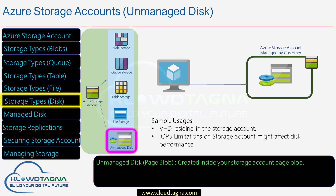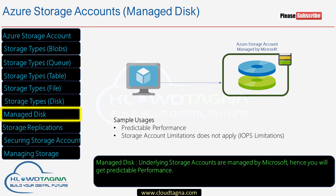When you create a virtual machine, you have to attach a disk. There are two ways to provision a disk in the cloud: unmanaged disk and managed disk. With unmanaged disk, your disk file such as VHD (Virtual Hard Disk) is stored inside your storage account and managed by you. There are challenges with unmanaged disks due to storage account limitations — each storage account supports up to 20,000 IOPS. To address this, Microsoft offers managed disks, where you get predictable performance as the storage account is managed by Microsoft.